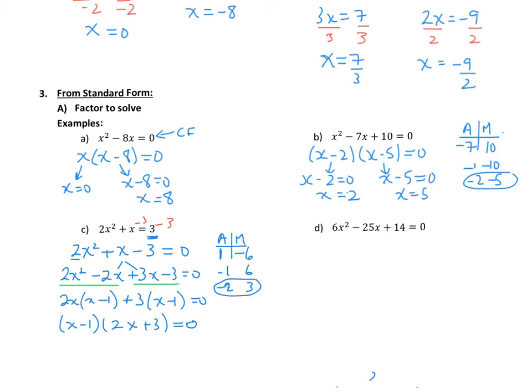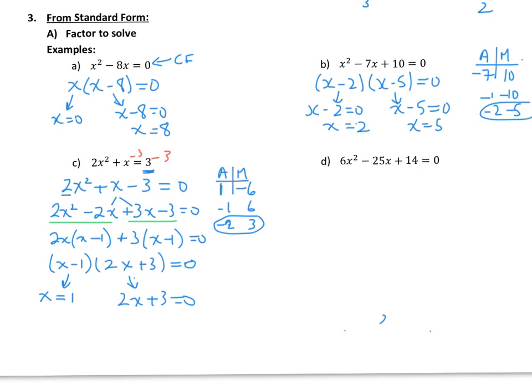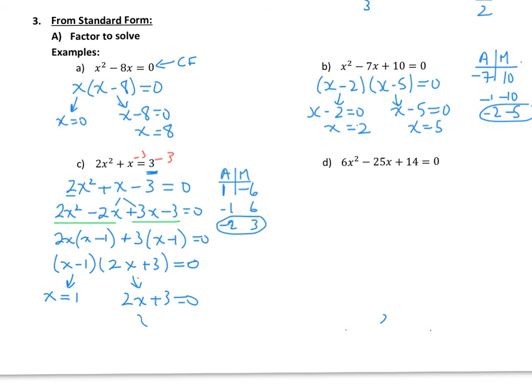So now we have our factored form. We're going to set each factor equal to 0. x minus 1 equals 0, or x equals positive 1. 2x plus 3 equals 0. We're going to get 2x equals negative 3. Divide both sides by 2. x equals negative 3 over 2.